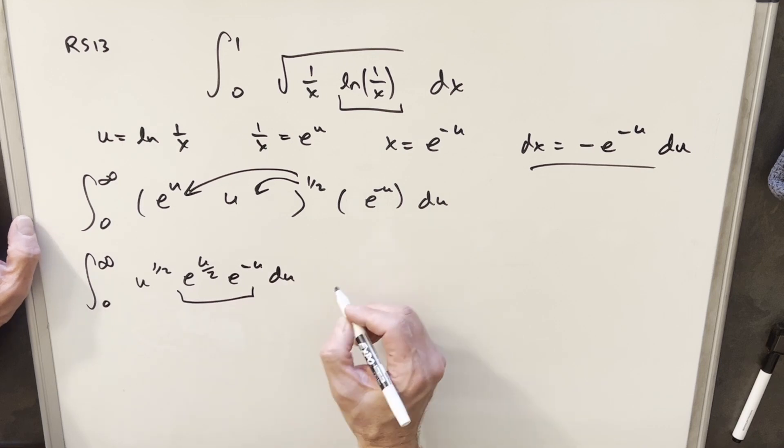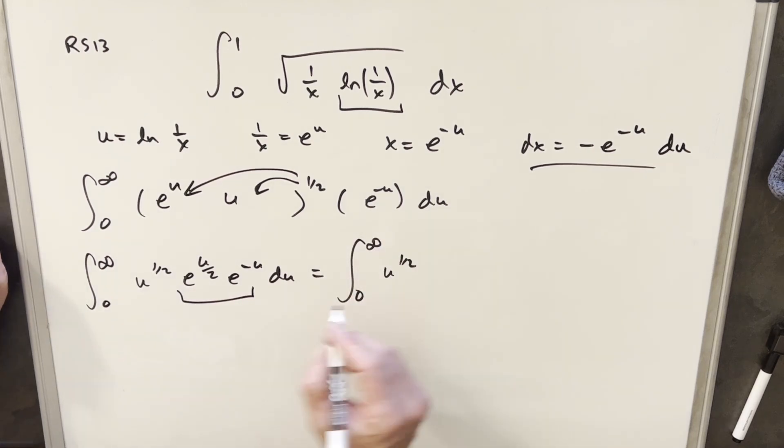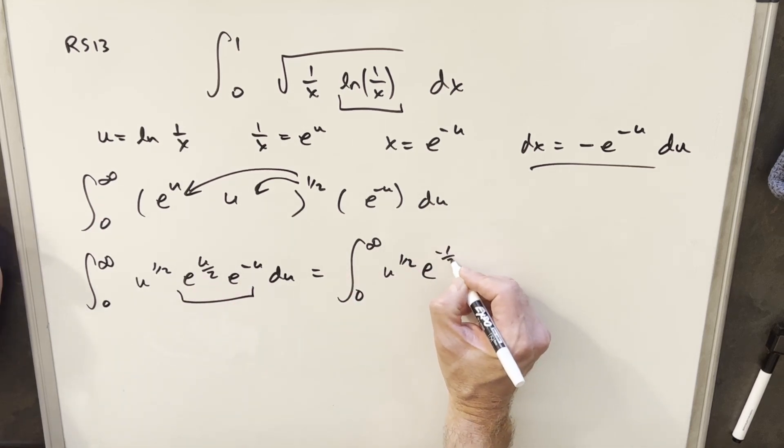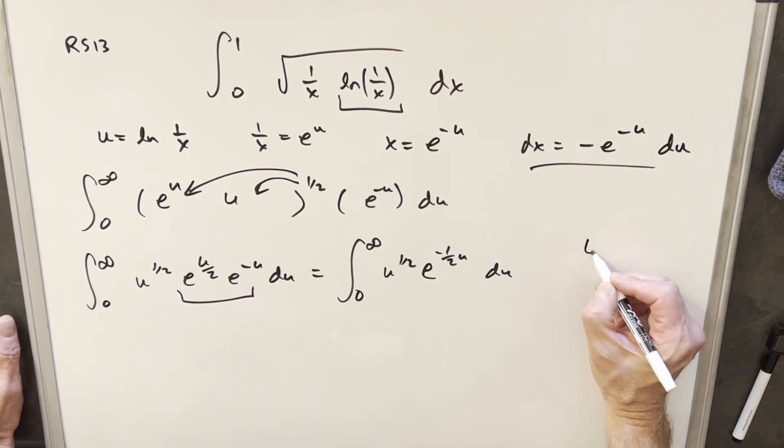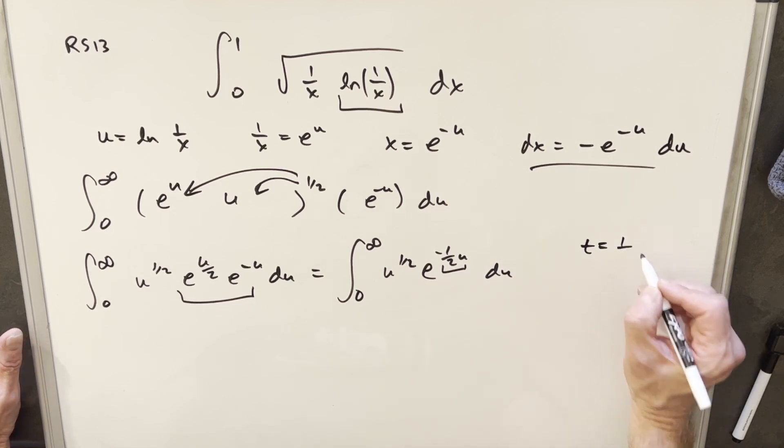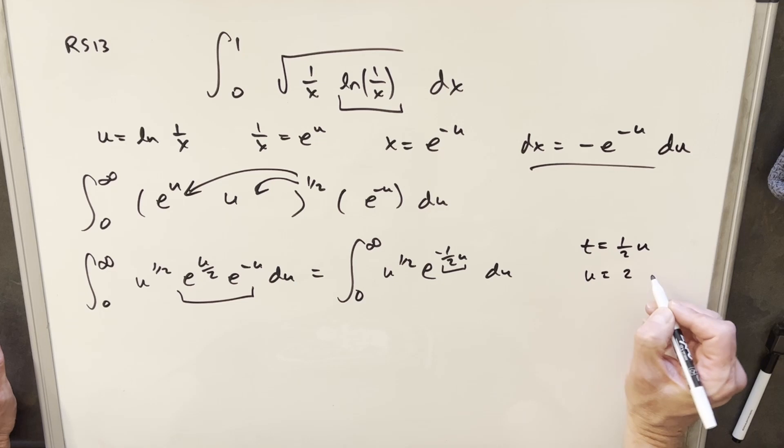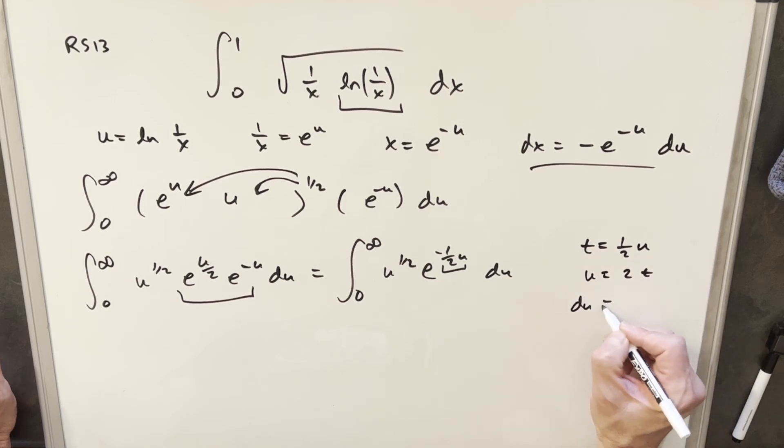Then I can combine these terms and add exponents. Adding the exponents here, we're going to have half u minus 1 u which is just minus half u du. Now at this point, I'm going to do another substitution. We're going to call t equal to half u. Then u is the same thing as 2t and du is 2 dt.